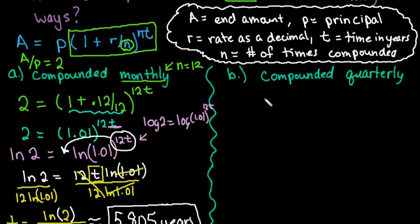The only difference for compounded quarterly is how we set this up. We would do 2 equals 1 plus the 0.12, which stays the same. The only thing that's changing is our n. For this one, our n changes to quarterly, which is four times per year. So I would plug in a 4 here and then put to the 4t at the top. Otherwise, the work is going to look exactly the same.